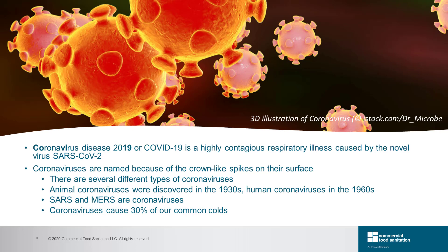Coronavirus disease, or COVID-19, is an infectious respiratory disease caused by a newly discovered coronavirus, SARS-CoV-2. Coronaviruses were first discovered in the 1930s in domestic chickens. In the 1960s, they were isolated from humans with the common cold. There are four different subgroups of coronaviruses: alpha, beta, gamma, and delta. SARS-CoV-2, like SARS and MERS, is considered within the beta subgrouping. The coronavirus associated with our common cold is in the alpha subgroup.